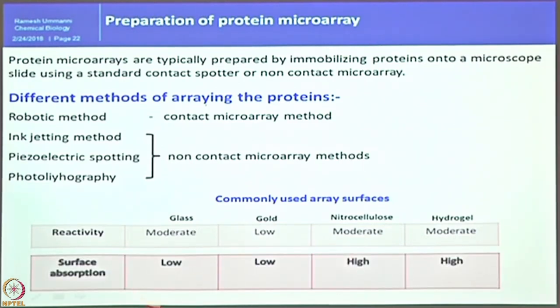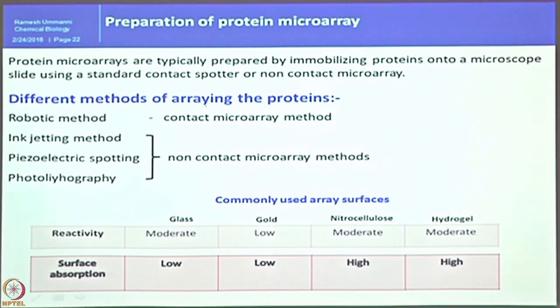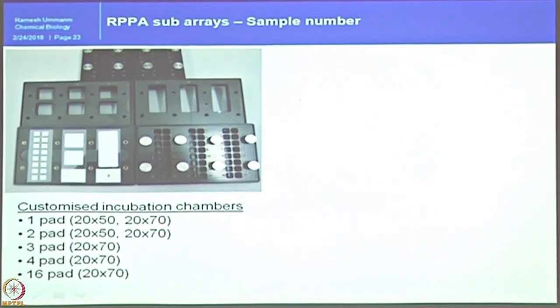The nitrocellulose-coated slide looks like a white layer on the glass slide — similar to how a thin layer is formed by silica gel in thin layer chromatography, except here the nitrocellulose coating is used instead. Once you have the glass slide, you can decide the array design. One slide can accommodate 2,000 samples, but you don't need to wait until 2,000 samples accumulate — you can design the array in a miniaturized fashion.